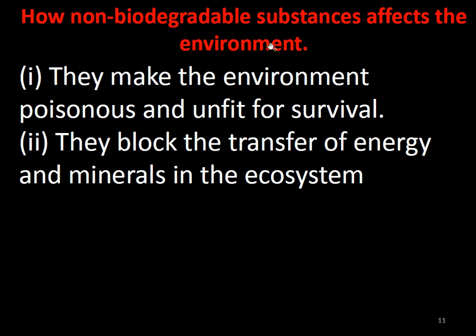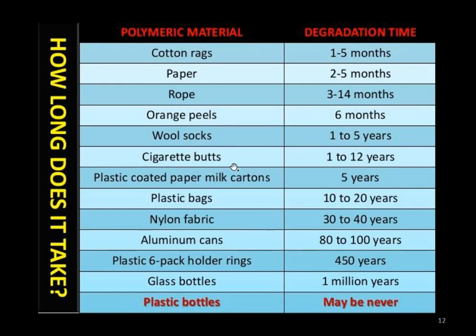How do non-biodegradable substances affect the environment? Non-biodegradable substances make the environment very poisonous and unsuitable to survive in. They block the transfer of energy and minerals in the ecosystem. For example, paper takes 2 to 5 months to degrade, whereas glass bottles take 1 million years to decompose, and plastic bottles are estimated to never degrade. So it is very unhygienic to use these substances because they harm nature.